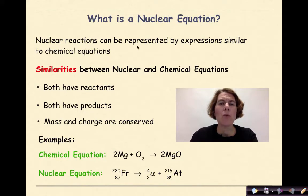So what is a nuclear equation? Nuclear reactions can be represented by expressions very similar to chemical equations. The similarities between nuclear and chemical equations: they're both going to have reactants and they're both going to have products. When we look at a nuclear and chemical equation, mass and charge are both conserved.